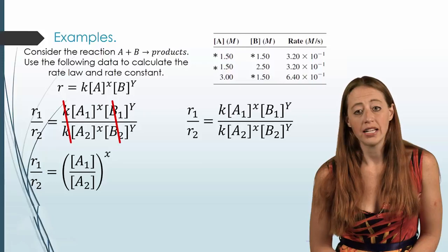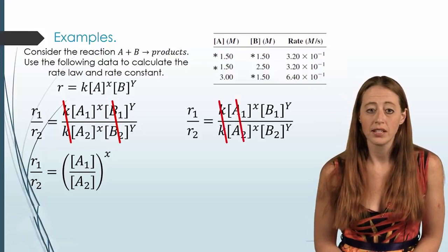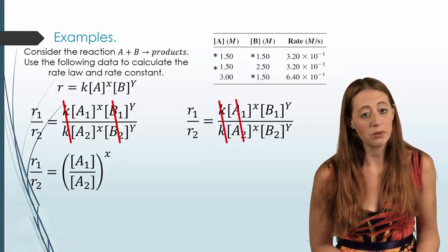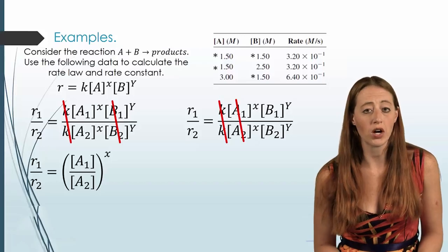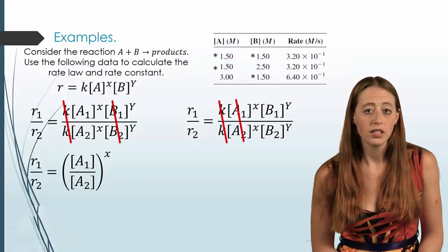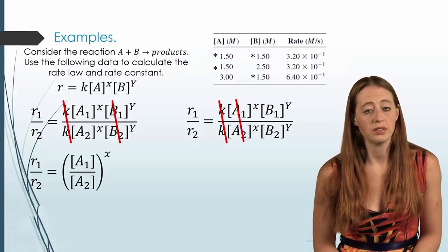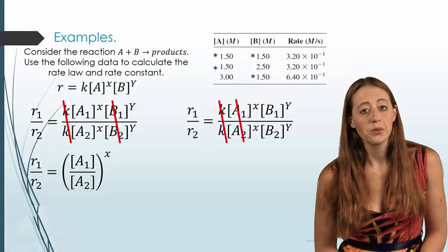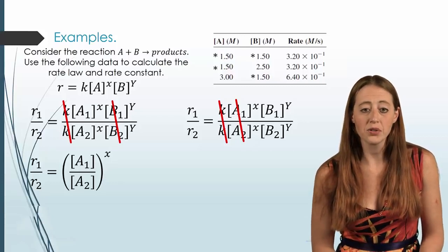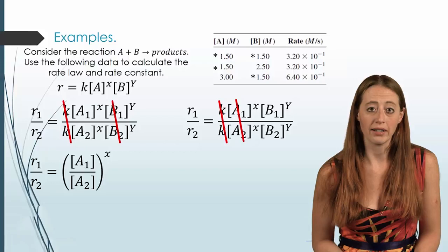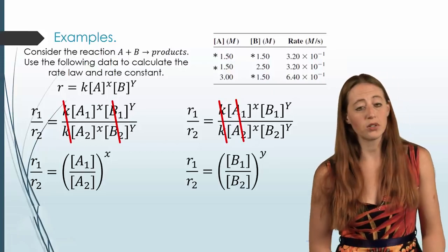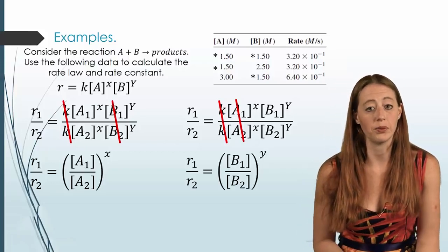Now, the same thing will happen if we hold A constant. Only now, K and A will cancel out. And this will leave us with R1 over R2 equals B1 over B2 raised to the power of y. Once again, we know all of our numbers, and so the only thing that we're left with is y.